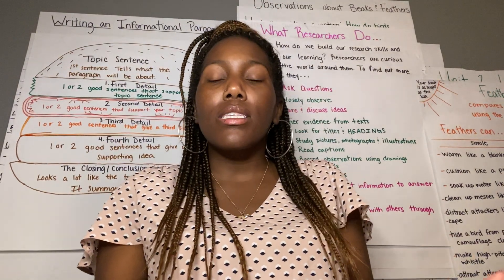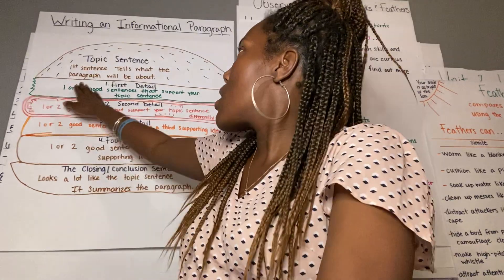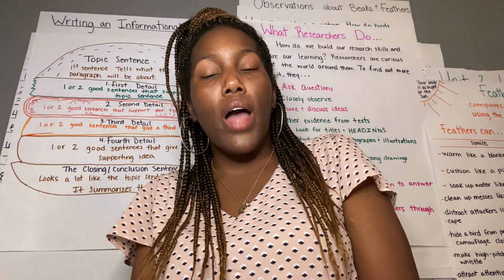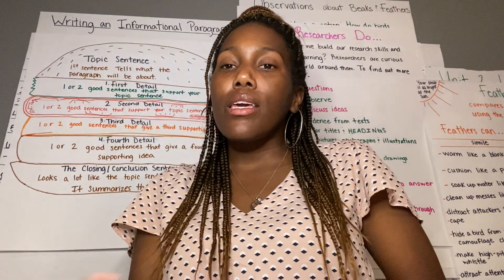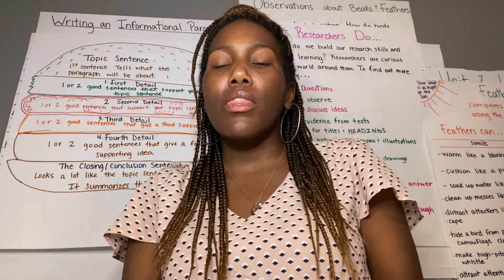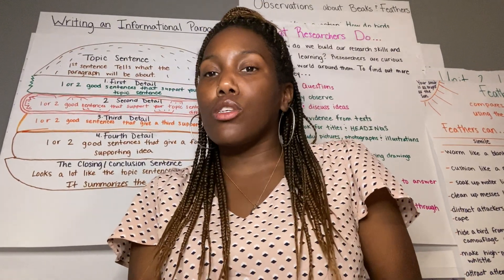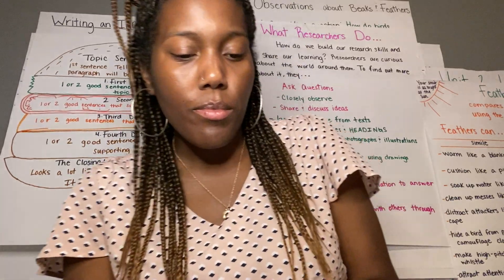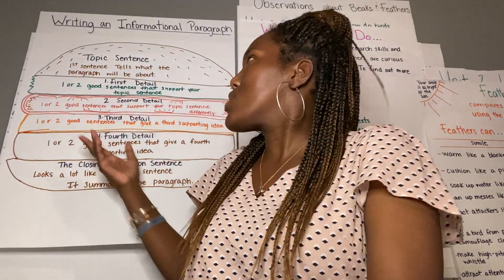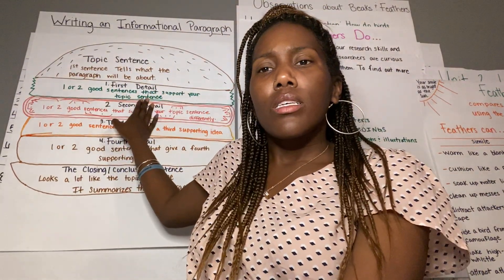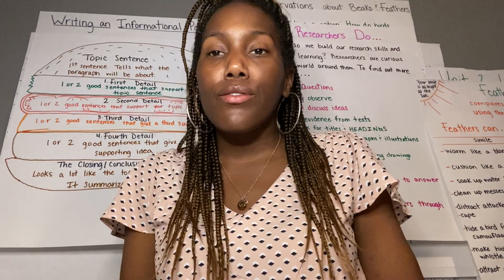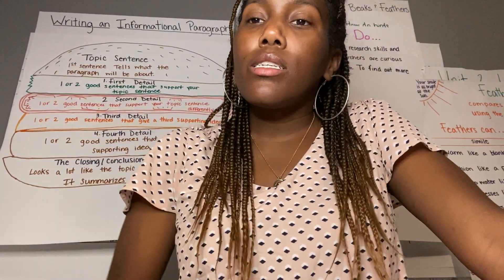So how could we think about all of the different things that we've learned together and come together and make a topic sentence? I think that our first sentence should be something like: birds use their feathers in lots of different ways to survive. It's not quite giving away any of the details yet about how birds use their feathers, but it's telling them that there are lots of ways that we know that birds use their feathers to survive.